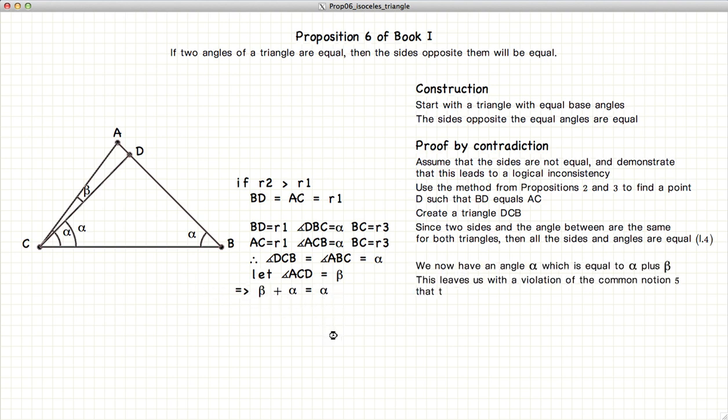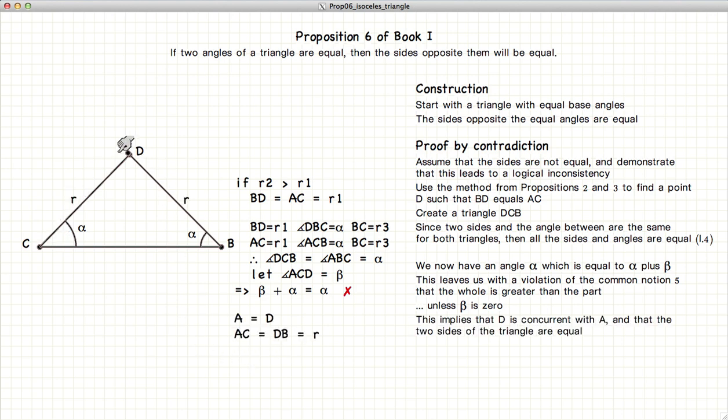Well that's rather nonsensical, unless of course beta is equal to zero. And if that's the case, A lies upon D and the two sides of our triangle are equal.